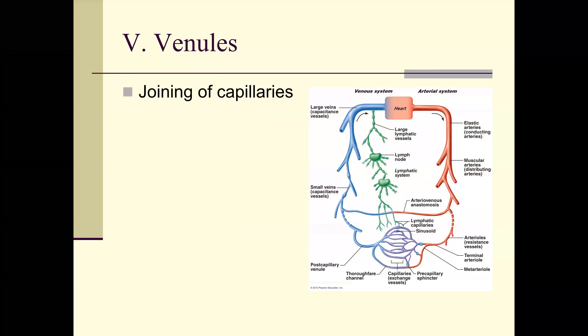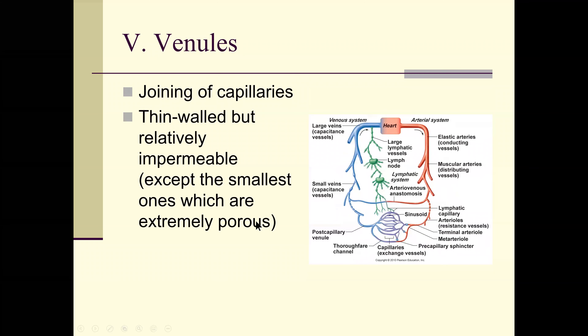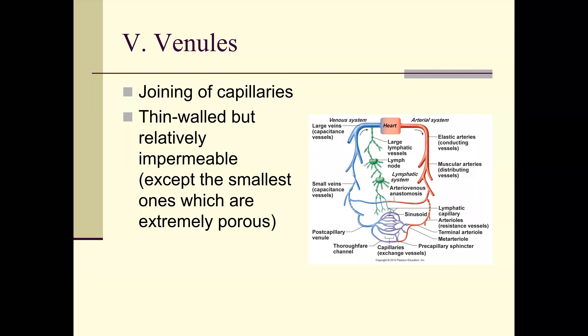Venules join the capillaries. They have thin walls but are relatively impermeable, except the smallest ones which are extremely porous — they're literally just a little bigger than capillaries. Once you get into the venous system, it's like the arterial system — a highway. You keep going until you get back to the heart. Pressure continues to fall all the way through.